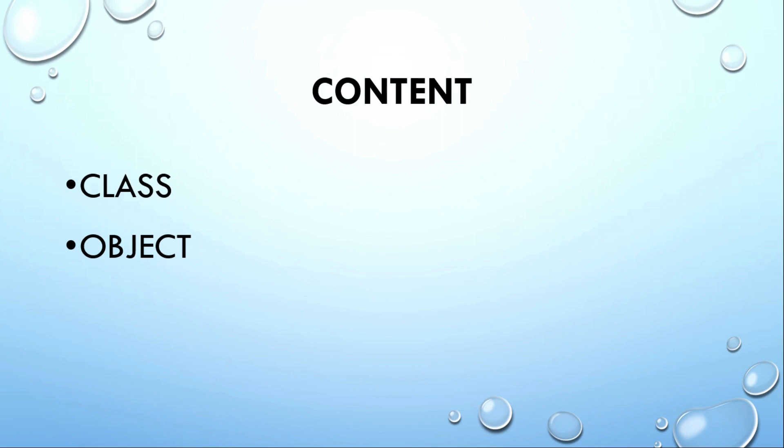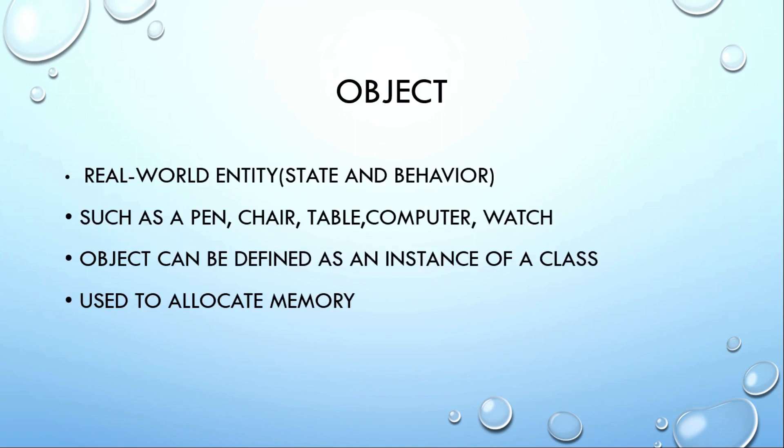Now we are going to talk about the topic Class and Object. First, what is an Object? Object is a real-world entity. For example, chair, pen, computer, laptop, fan — these are all objects.